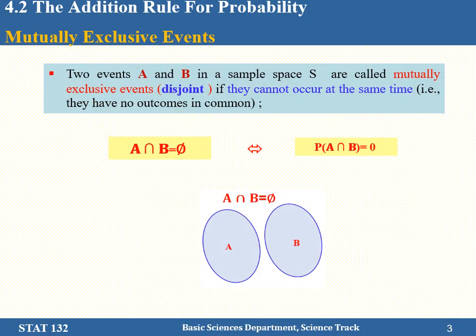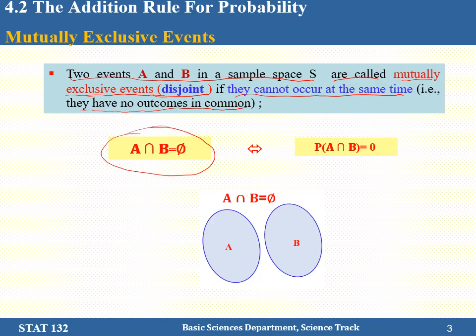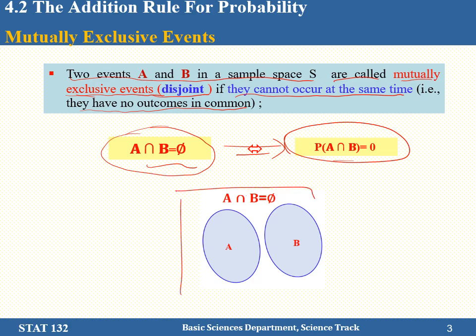Now let's start with mutually exclusive events. Two events in a sample space are called mutually exclusive events or disjoint events if they cannot occur at the same time. In terms of sets, we can say they have no outcomes in common. They're called mutually exclusive because mutually they exclude each other — if one happens, the other cannot happen. If they're mutually exclusive events, their intersection is equal to the empty set, which means the probability that A and B occur at the same time is zero. In the Venn diagram, they don't have any outcome in common.